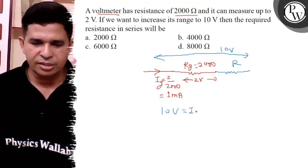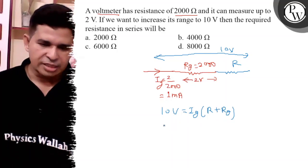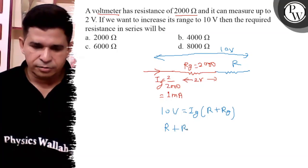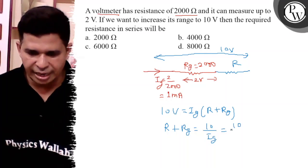So 10 volt is equal to ig into r plus rg. So what is r plus rg? It is 10 upon ig, so it is 10 upon 1 milliampere.